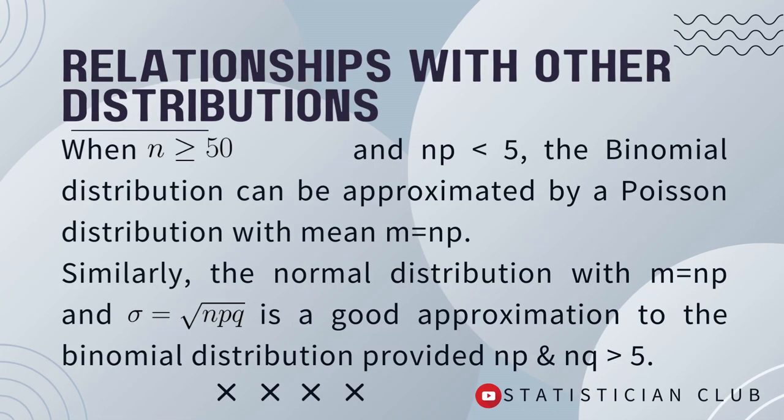When n, the sample size of the binomial distribution, is greater than or equal to 5, and np — where p is the probability of success and n is the sample size — when np is less than 5, the binomial distribution approximately approaches the Poisson distribution.